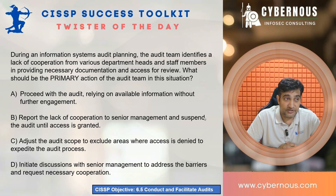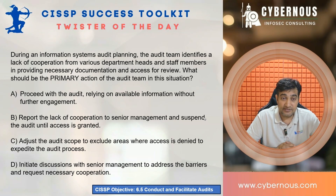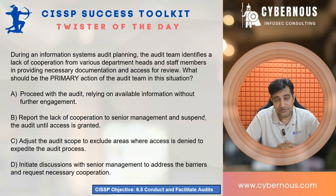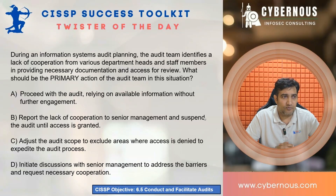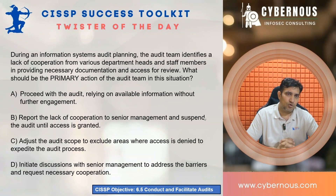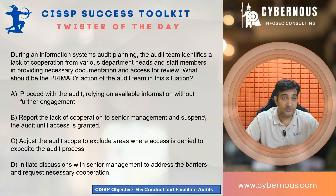During an information security system audit planning, the audit team identifies a lack of cooperation from various department heads and staff members in providing necessary documentation and access for review. This is a very practical question and this scenario happens a lot — those who are into audits will perfectly agree. What should be the primary action of the audit team? If you feel that the team and some stakeholders are not cooperating with you and are delaying your process, what should be done?